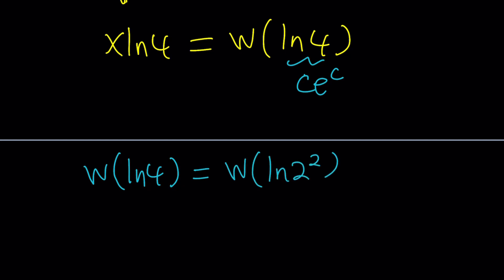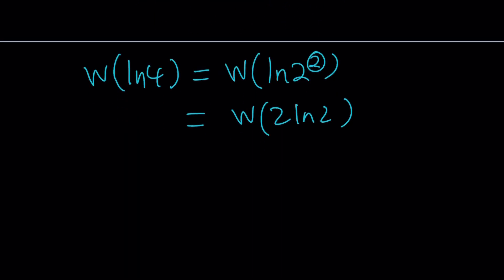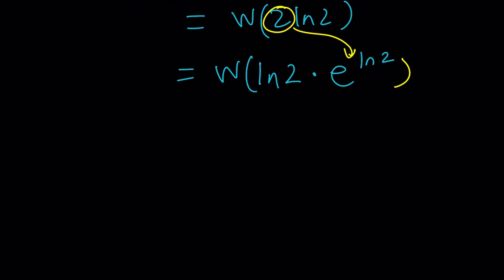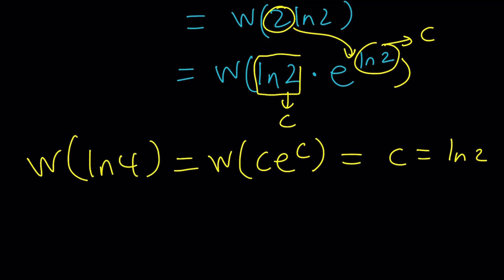So I'm going to do the following. I'm going to write this as ln2 squared. And by using properties of logarithms, I'm going to write this as w of 2 ln2. This is where the mathemagic begins. I'm going to write this as ln2 times e to the power of ln2. In other words, convert this 2 into that. And remember, we did that on the left-hand side already. And now, this is going to be your c. You see what I see? Okay, hopefully you do see. And what you should see is c e to the c. And if you apply w on it, you're going to get c, which is ln2. Makes sense? So in other words, w of ln4 is ln2, which is kind of interesting, right?